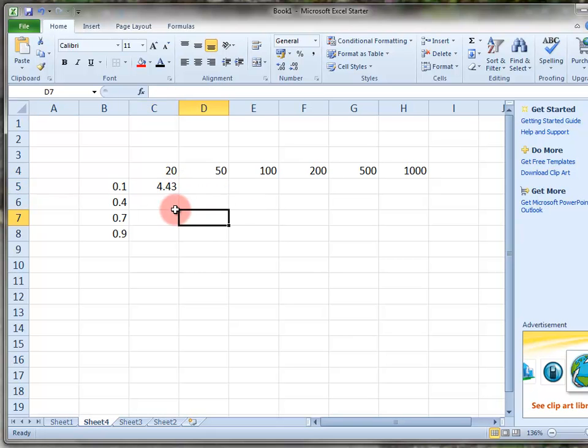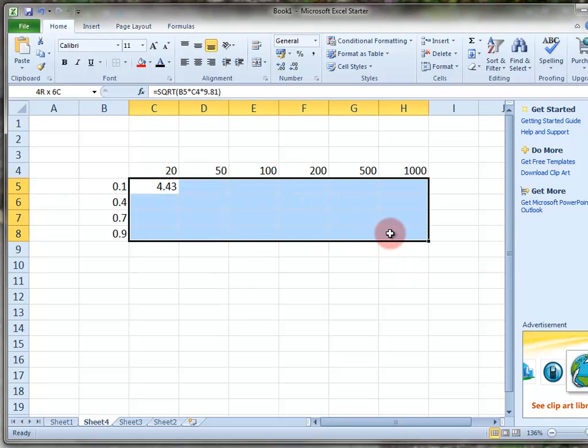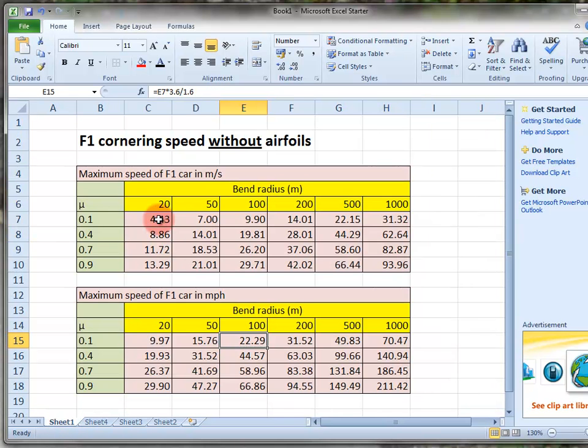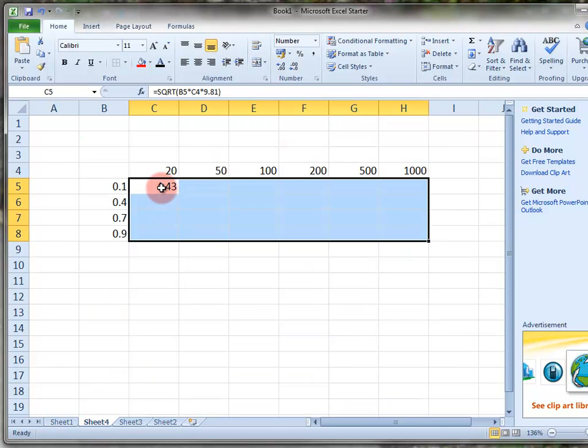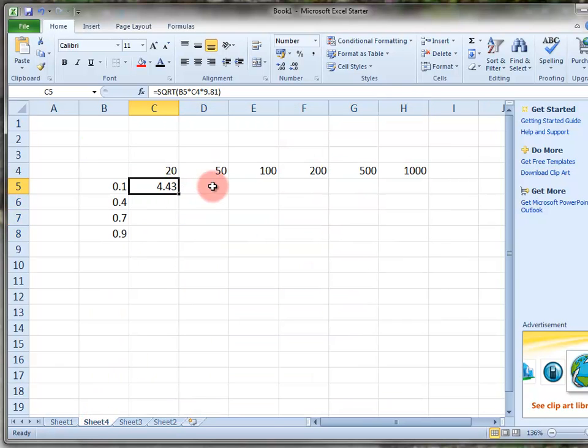Now, it's going to be the same formula in all of these cells, looking back at the original table. 4.43 is the answer we've got. And we want to copy the same formula to all those cells, but we don't want to have to type it in everywhere.